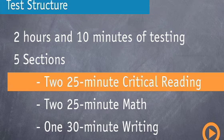The PSAT has five sections: two critical reading sections, two math sections, and one writing section. The two critical reading sections are each 25 minutes. In these critical reading sections you'll see a variety of question types — some passage-based questions and some sentence completion questions that really test your vocabulary.